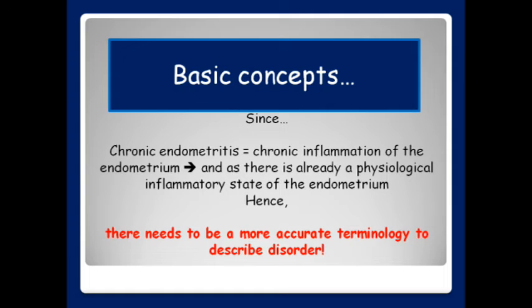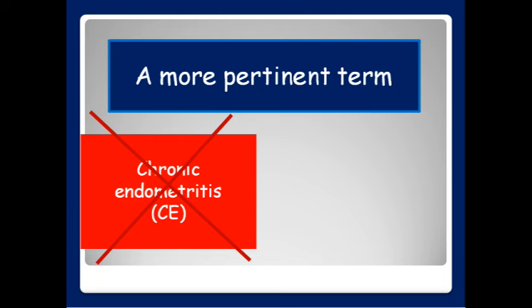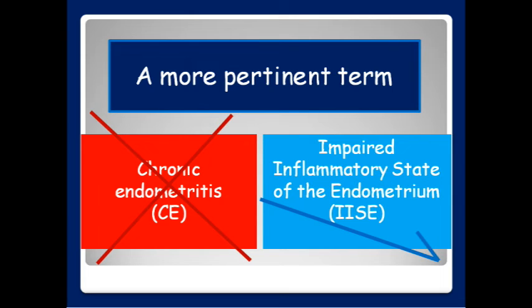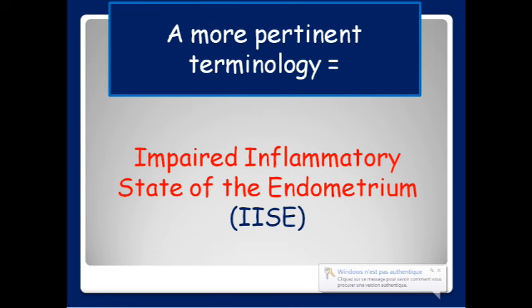And so, since chronic endometritis means persistent inflammation of the endometrium, and as there is clearly a physiological inflammatory state in normal endometrium, hence there needs to be a more accurate terminology to describe the disorder. A more pertinent term would be not chronic endometritis, but impaired inflammatory state of the endometrium — IISE.